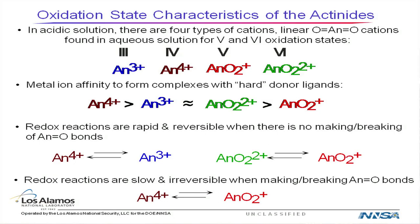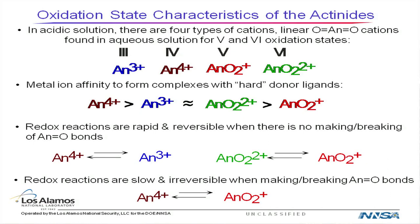The redox reactions — changing oxidation states — can be adjusted by adding things like hydrazine or hydroxylamine. They occur pretty rapidly when going between 3 and 4, and between 5 and 6, because they have the same type of structure. But when you go from 4 to 5, for example, those reactions are often slow and can be irreversible because you have to make or break these actinyl oxygen bonds, which are pretty strong.